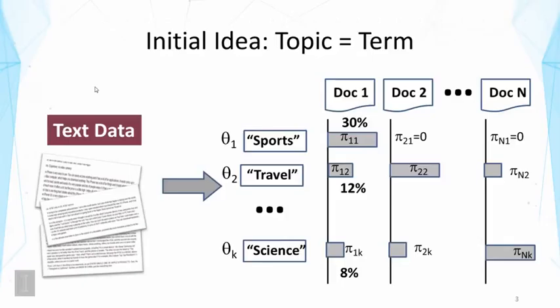For example, we might have terms like sports, travel, or science. If we define a topic in this way, we can then analyze the coverage of such topics in each document. We might want to discover to what extent document 1 covers sports — we found that 30% of the content of document 1 is about sports and 12% is about travel, etc. We might also discover document 2 does not cover sports at all, so the coverage is zero.